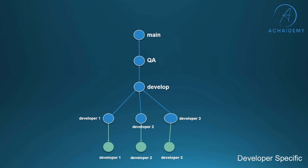You would create branches for each of your developers as a dedicated branch for them. So if you have three developers, you create three branches from the develop branch — say developer 1, developer 2, and developer 3 — which are then cloned by the individual developers to make their code changes, bug fixes, features, and commit the code into their respective branches. Once the developer's changes are reviewed and tested, they can go ahead and raise a pull request from developer 1 to the develop branch.